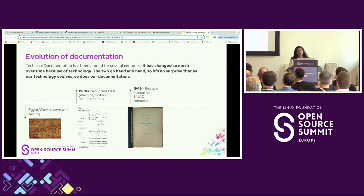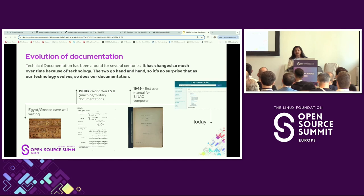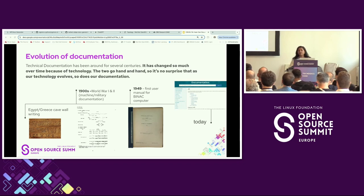Post the war, with the invention of computers, the first user manual was created — a handwritten document describing the BINAC computer. That's the first type of technical documentation that ever came into existence. Fast forward to today, all of our documentation is consumed on the web, hosted on cloud platforms or web development engines. You have documentation not just for software, but for pretty much everything you consume as a user — even if you're buying clothes or food, everything has some form of documentation.